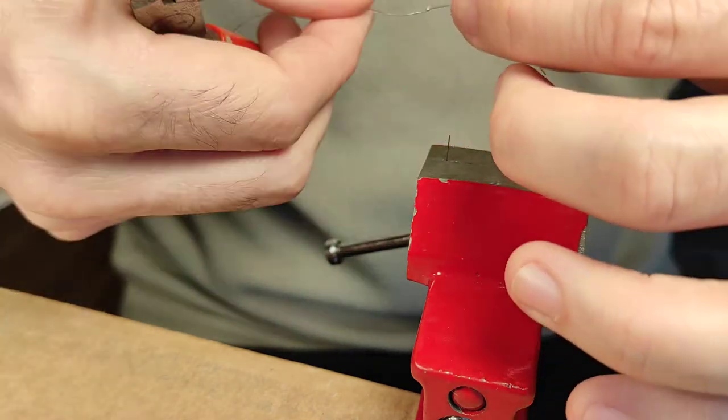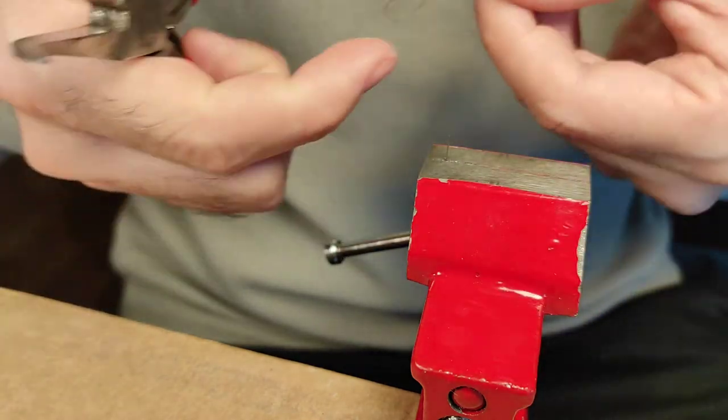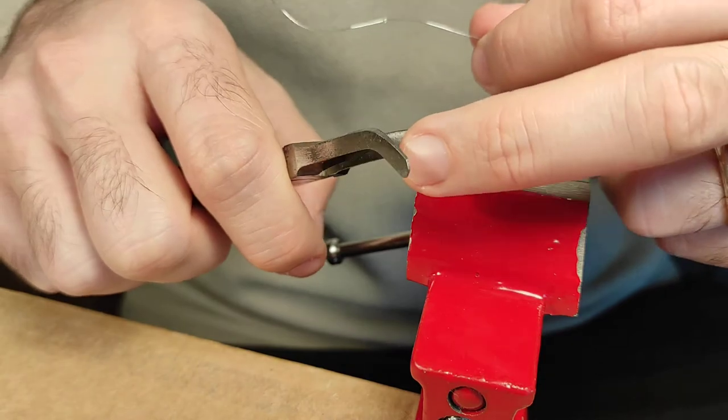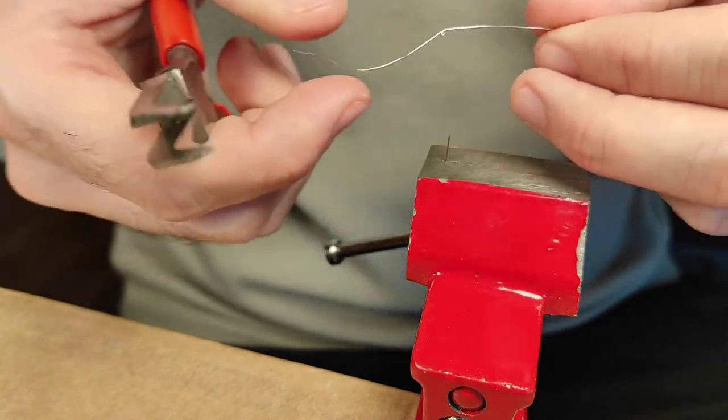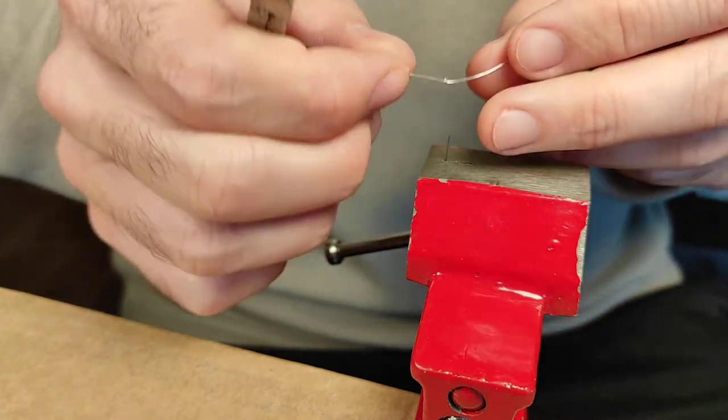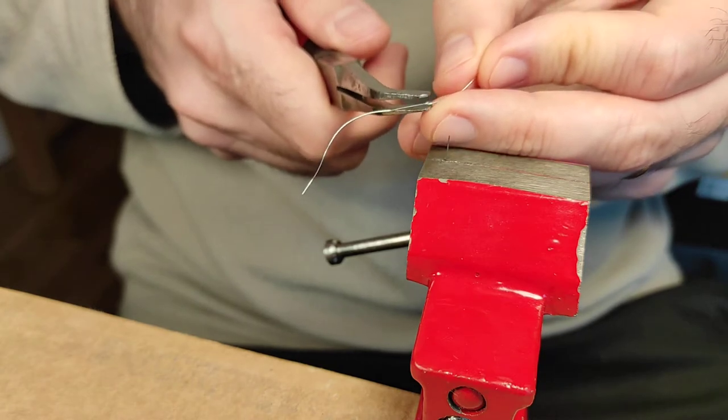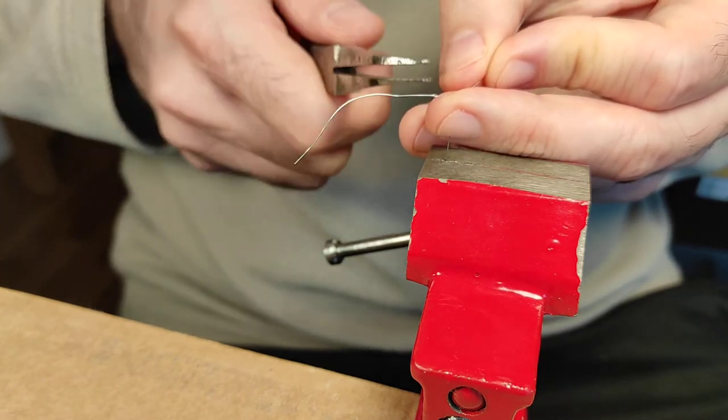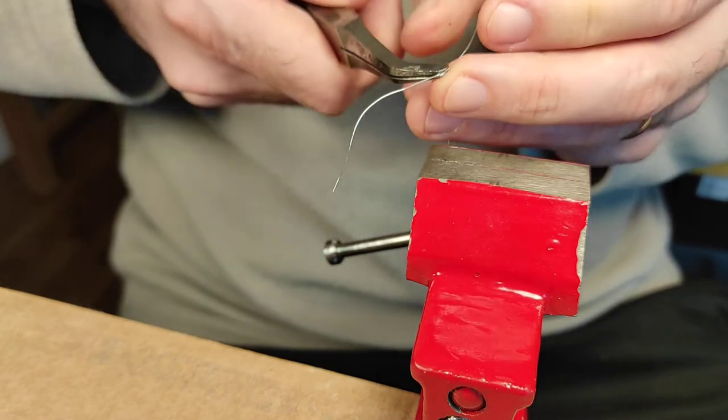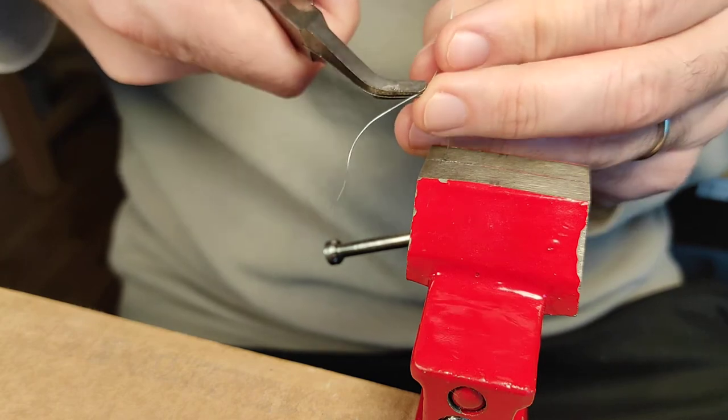I clamp the eye with the pliers and I use flat pliers, such as this one, just not to make any marks inside the copper wire. I clamp it exactly here, at the end of the eye. I hope you can see it. I move it like so, so that you can see it better.